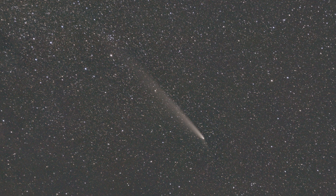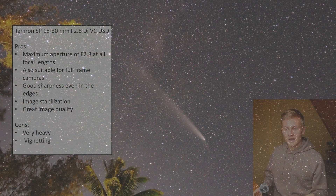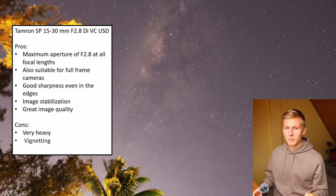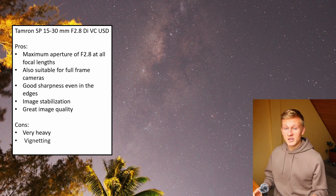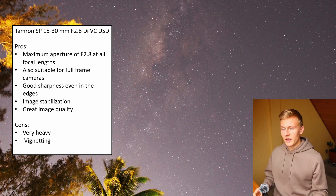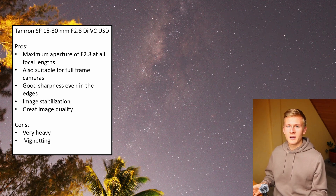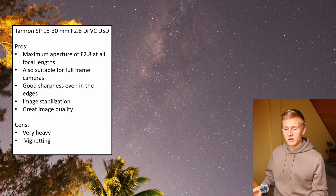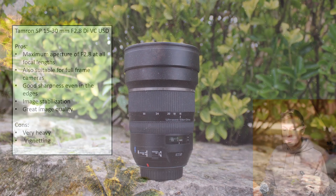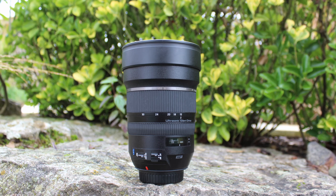Another disadvantage is a bit of vignetting. In my case I don't have much of a problem with it, but other astrophotographers have mentioned they do. I'm using an APS-C sensor so it's less relevant for me, but you can see some vignetting in the sample images shown. When using a full frame sensor, vignetting might be more difficult to deal with, though I can't say for certain as I'm not using one.